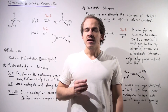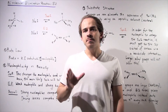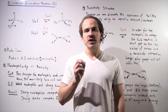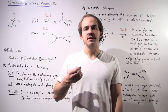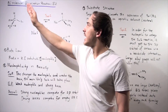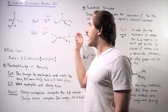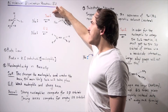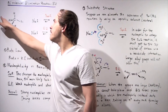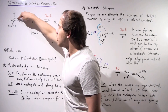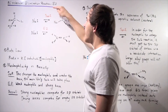Whenever we have the SN1 reaction, there's a second type known as the E1 reaction that can compete with our SN1 reaction. In the same way, whenever we have an SN2 reaction, a second type of elimination reaction known as the E2 or bimolecular elimination reaction can compete with our SN2 reaction. In the SN2 reaction, we have a nucleophile that takes its pair of electrons, attacks this carbon via a backside approach, kicking off the leaving group, forming the product via a one-step SN2 reaction.